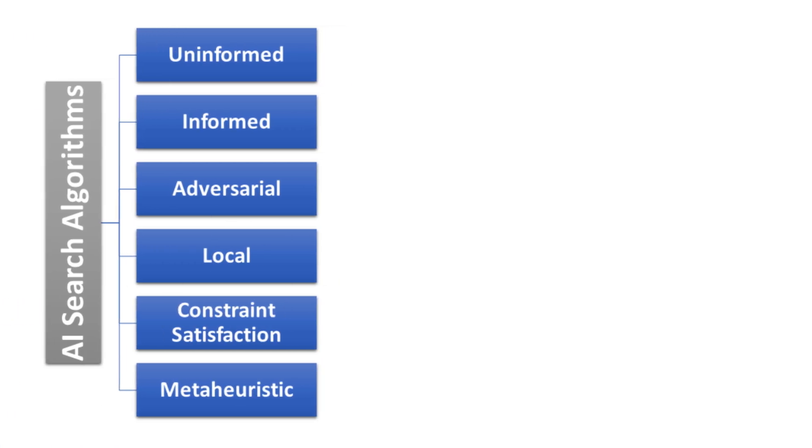In the last video, we discussed different kinds of searching algorithms like uninformed search, informed search, adversarial search, local search, constraint satisfaction search, and meta-heuristic search. First, we will start with the uninformed searching algorithms.